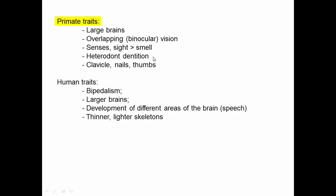Primates also have heterodont dentition — different types of teeth including incisors, canines, premolars, and molars — as well as a clavicle, nails, opposable thumbs, and grasping digits. Within primates, what distinguishes humans includes true bipedalism — we walk upright all the time rather than just occasionally like chimps — and even larger brains, with particular development in regions associated with speech.